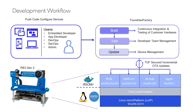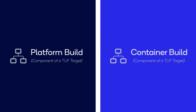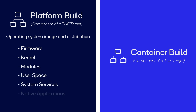With Foundries Factory, the Update Cycle has a simple design. It is a process of continuous integration and continuous development of your builds. The build process happens in the cloud once a new change has been pushed via Git — we call this GitOps development. There are two types of builds in Foundries Factory: platform and container builds, both components of an assigned TUF target. The platform build is an operating system image and distribution; it includes firmware, kernel, modules, user space, system services, and native applications.